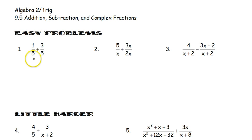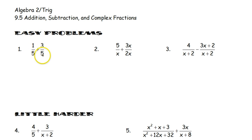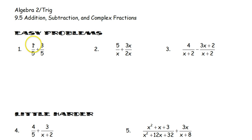If we are adding two fractions, the one thing that we know is that we must have a common denominator. If we don't have a common denominator, we have to make one. In our first problem, both denominators are 5, so we add the numerators to get 4 fifths.